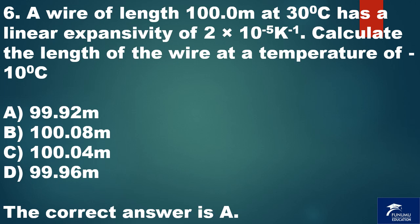Question 6. A wire of length 100.0 meters at 30 degrees Celsius has a linear expansivity of 2 times 10 raised to power minus 5 K raised to power minus 1. Calculate the length of the wire at a temperature of minus 10 degrees Celsius. A. 99.92 meters. B. 100.08 meters. C. 100.04 meters. D. 99.96 meters. The correct answer is A.